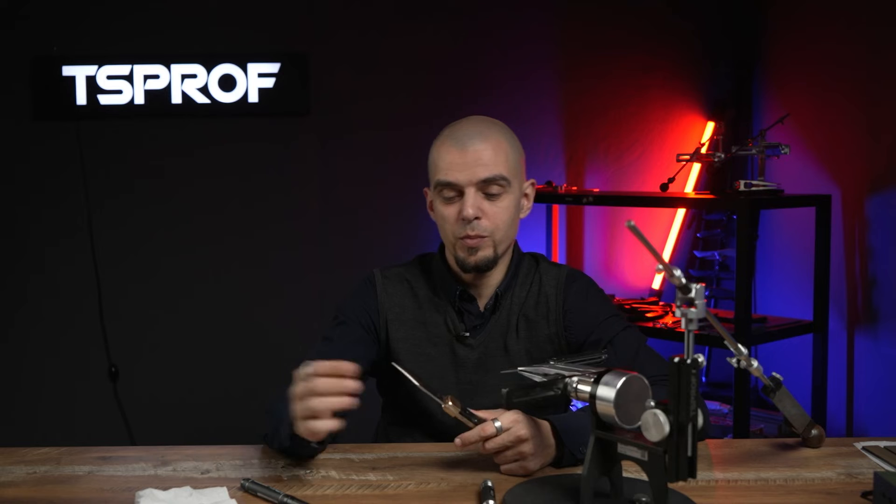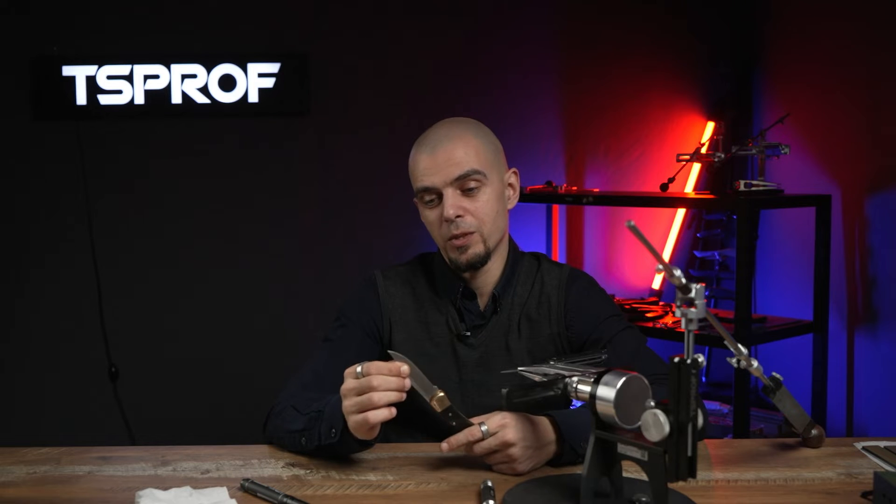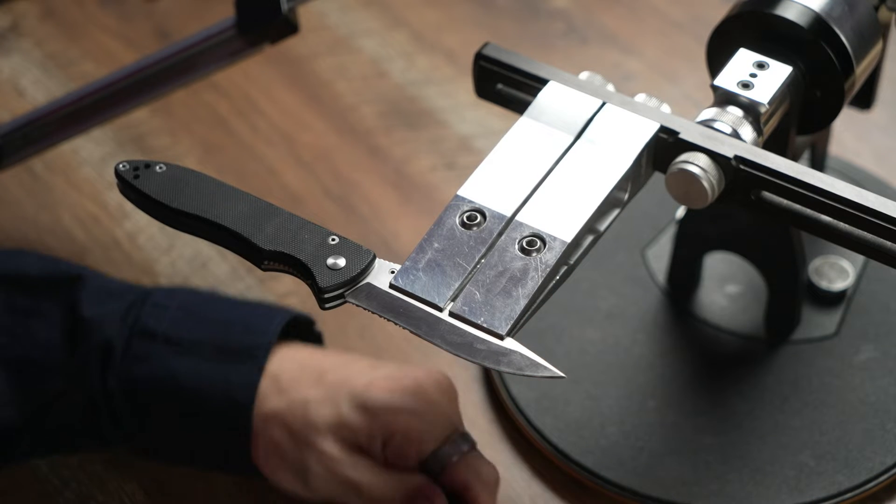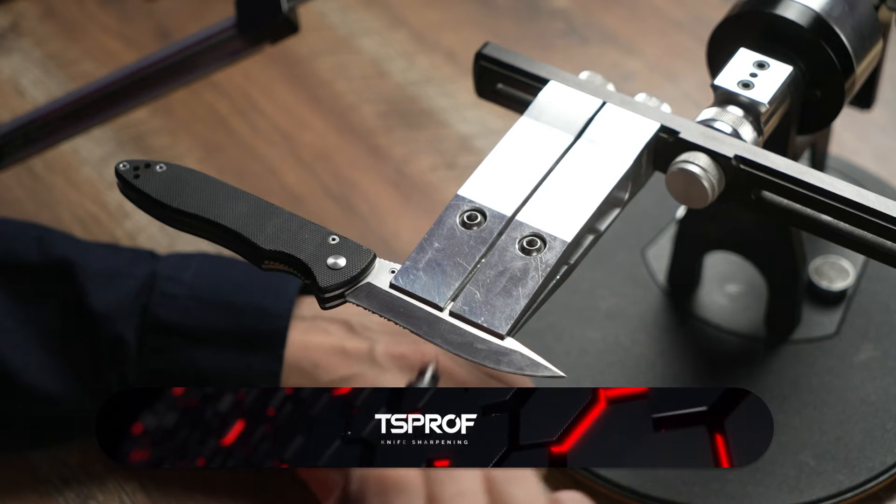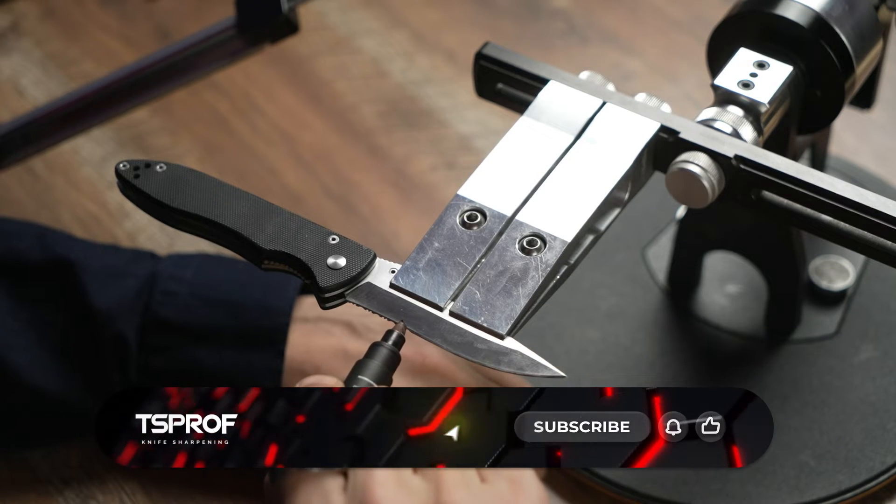But with our system we want to get this symmetry. And now let's see how we can do it. To catch the right angle we are going to use the marker that will show us the real borders of the bevel.